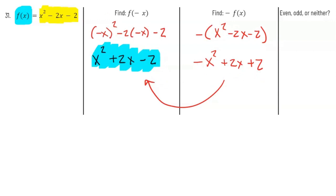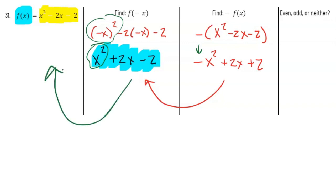An important note: (-x)² means (-x) times (-x), which turns into positive x². But -f(x) means the negative is on the outside, so it's -(x²), which stays negative x². You have to be careful with that distinction. So f(-x) is not equal to -f(x) and not equal to f(x), meaning this function is neither even nor odd.